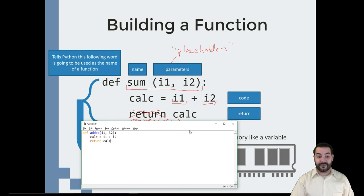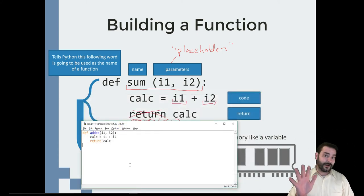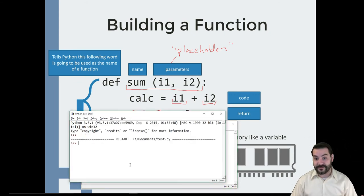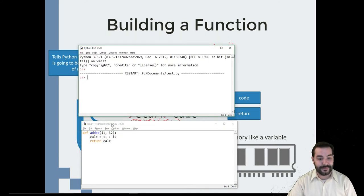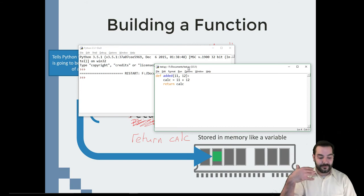Now I'm going to save this, save it to my documents and test.py. When I run this, I'm going to hit F5. Nothing happens. That's not necessarily a bad thing though. You see, what happens, just like you see here, is my method, my function has been loaded into memory. It's stored somewhere in memory.